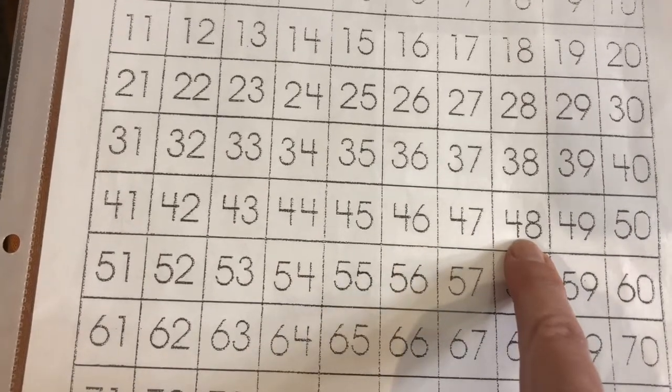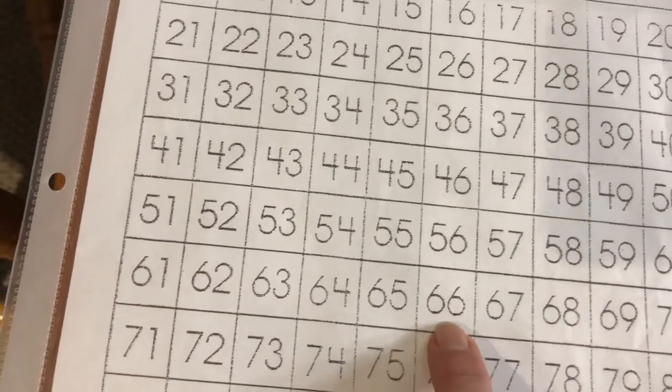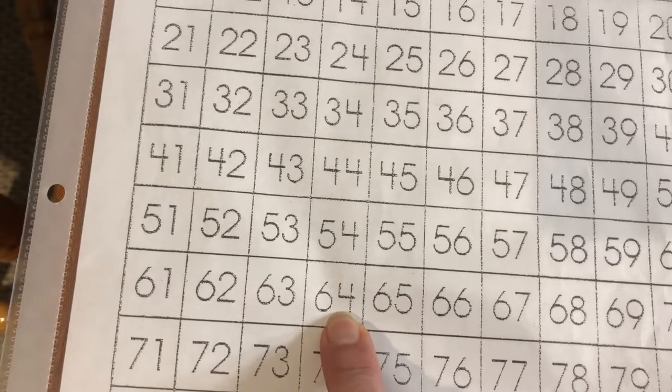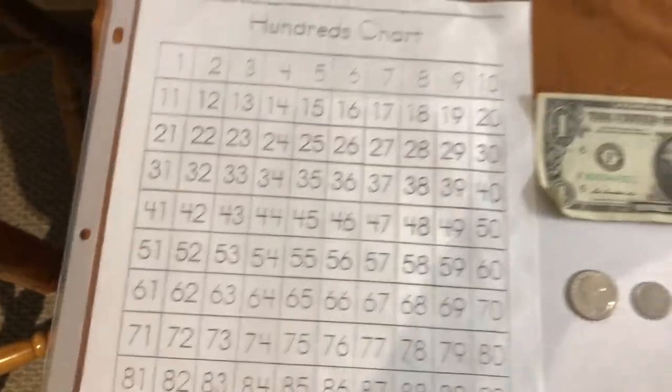We could also do it 10, 20 minus 1, 2, 3, 4. 20 minus 4 is 16. You could do it that way. Either way, whichever way you want.